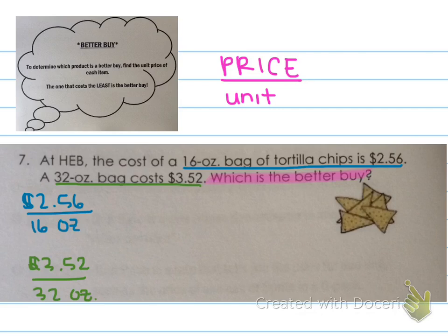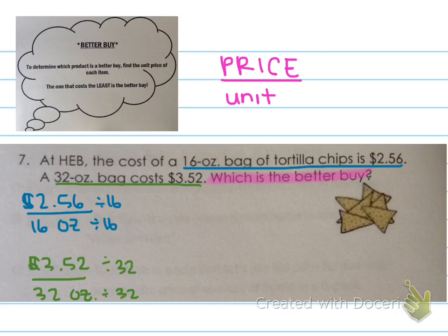Now we have both ratios. What we have to do next is figure out the unit price for each of these different products. Remember, that means we need a denominator of 1. On the first one, we'll be dividing both numerator and denominator by 16. And on the second one, we'll be dividing both numerator and denominator by 32. Go ahead and solve that on your own — pause the video to do that, and then press play to check.